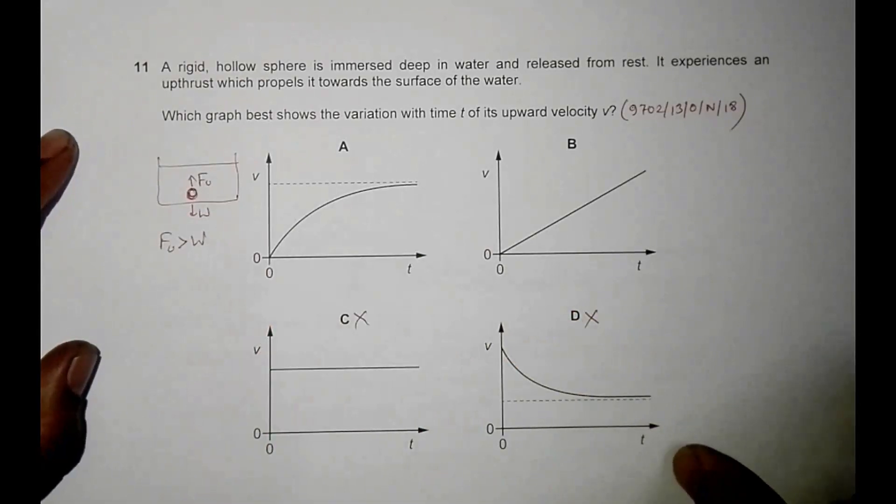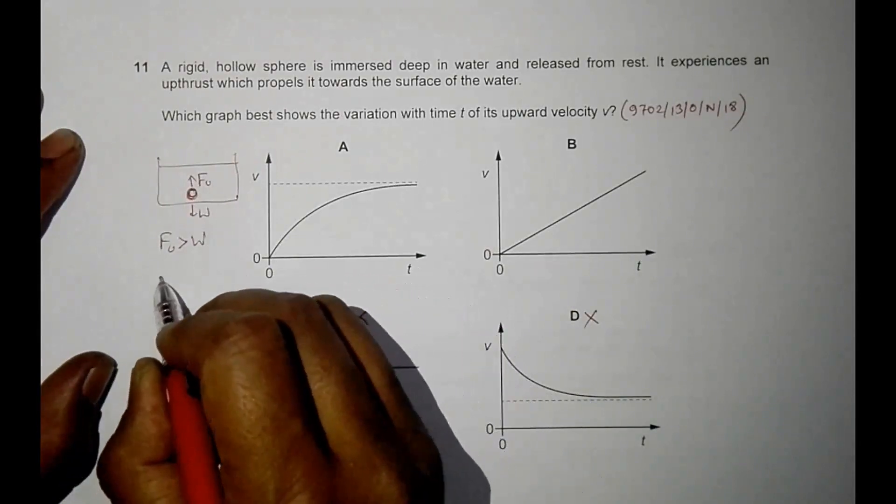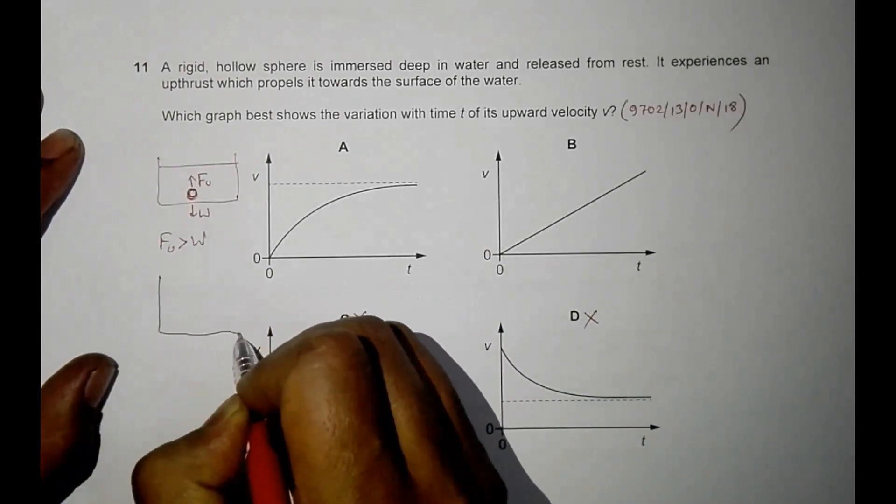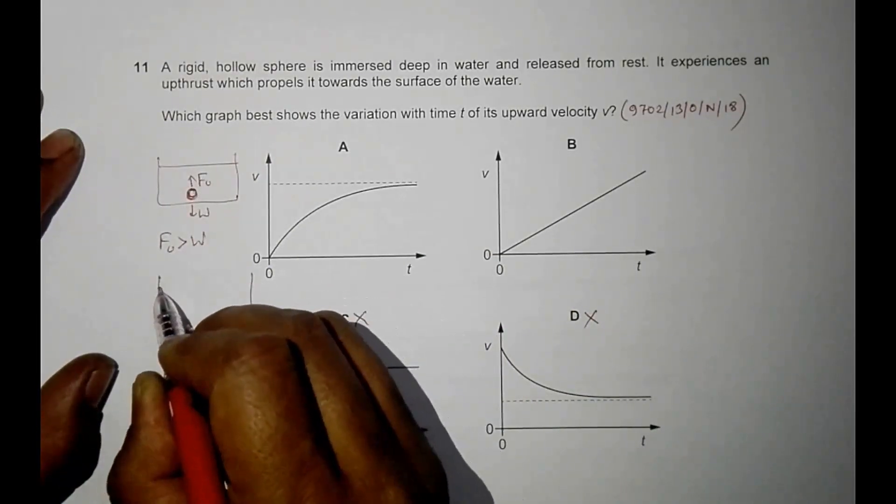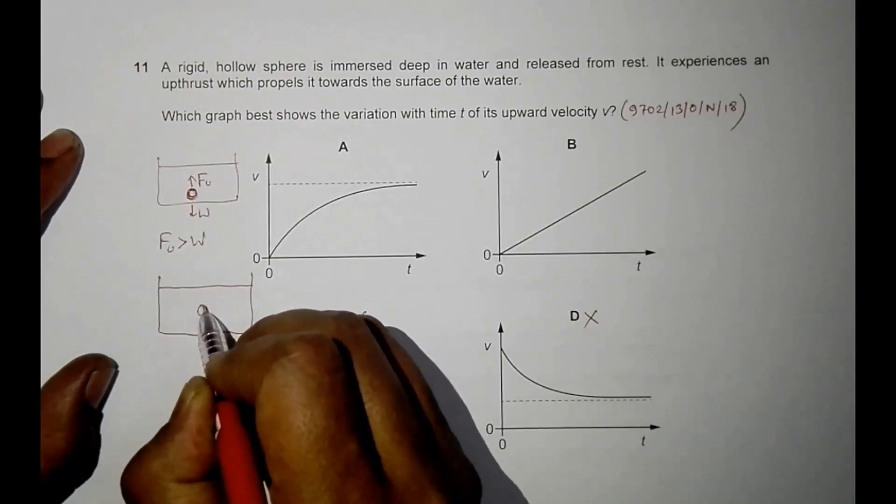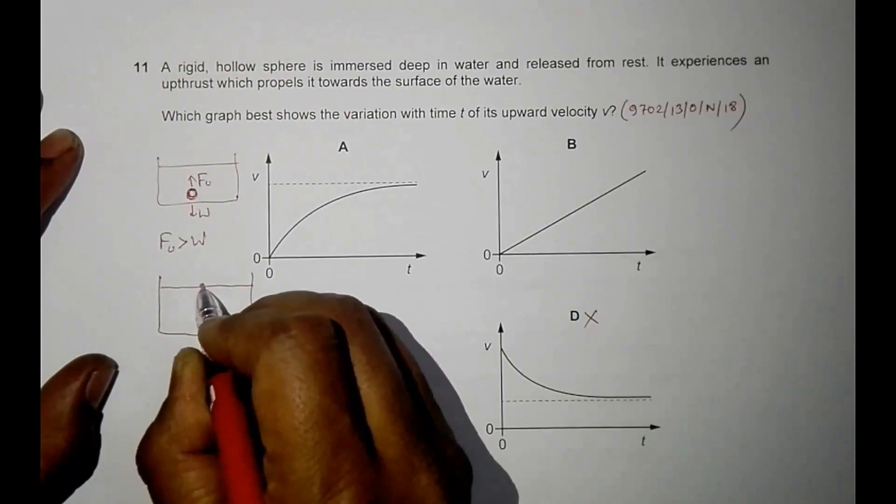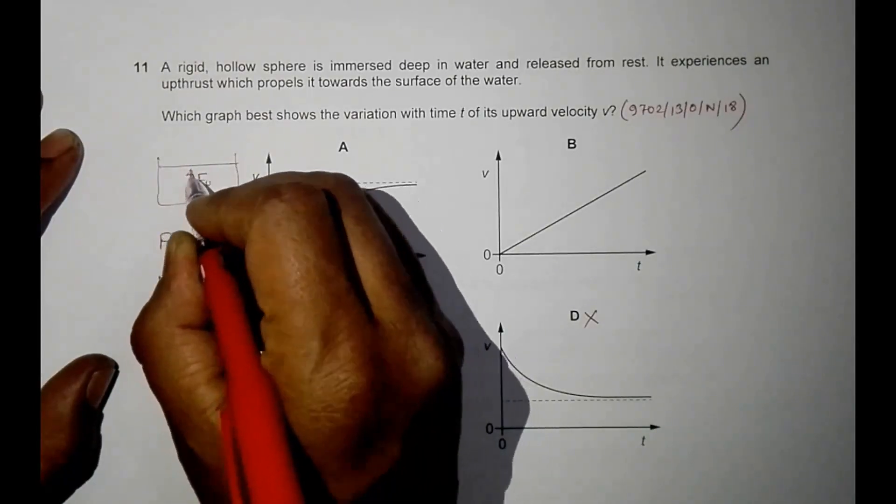Now when it comes up, another force also arises which is the viscous force, because viscous force becomes active when the body moves. So when it moves up, we have W here, we have this upthrust also here, and now we have another force called the viscous force.